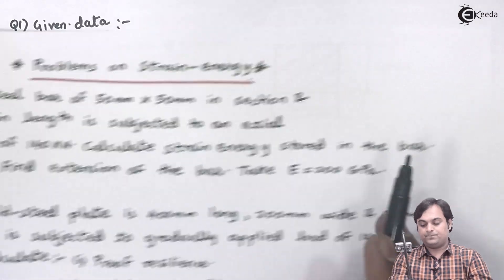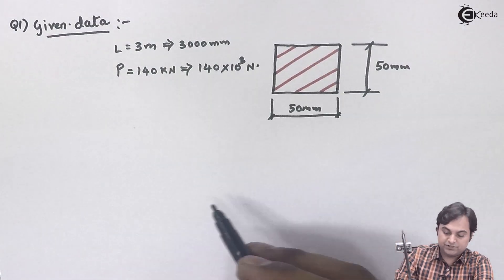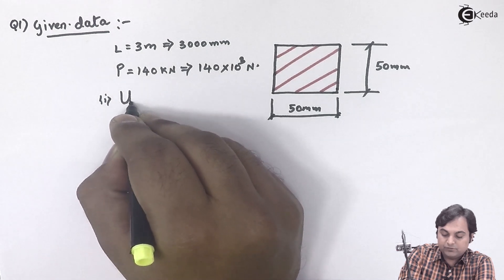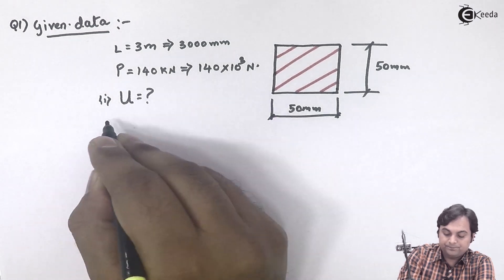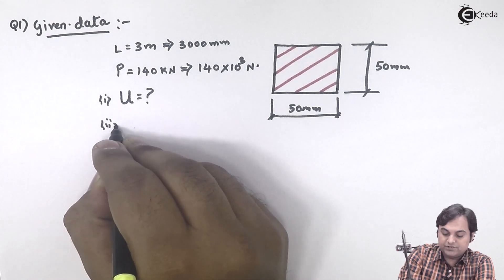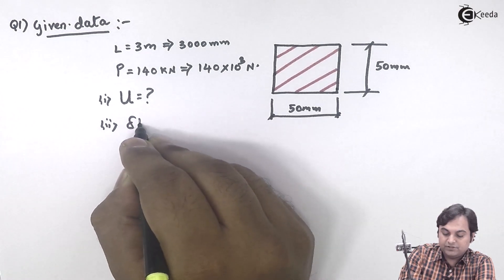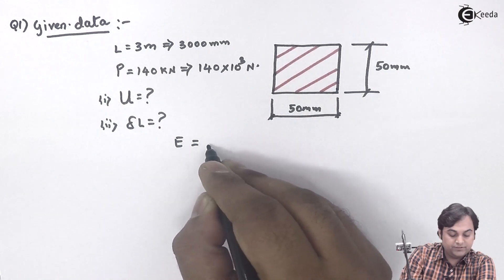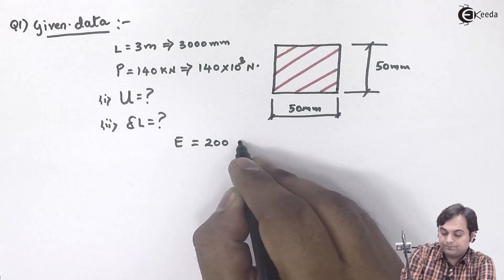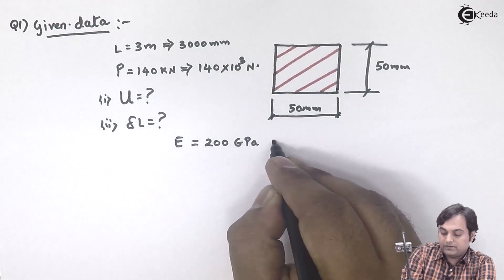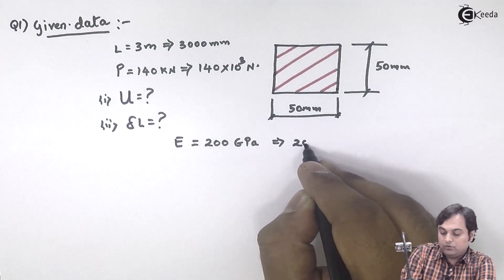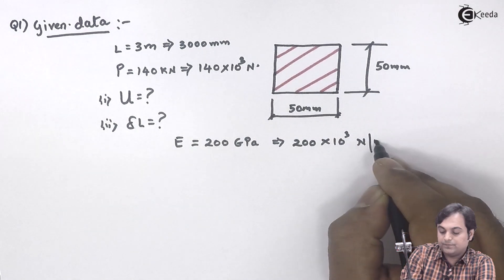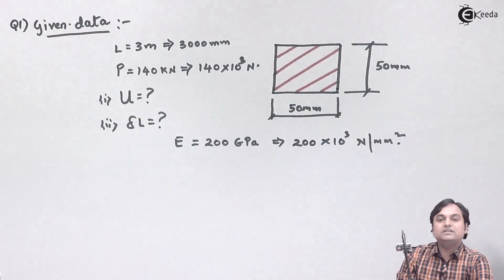Next, the question is calculate strain energy stored in the bar, also find extension of the bar. So the first question is we have to calculate the value of capital U, that is strain energy, and the second question is we have to calculate deflection delta L. Capital E value is given as 200 GPa, and that is 200 times 10 to the power 3 Newtons per mm squared.